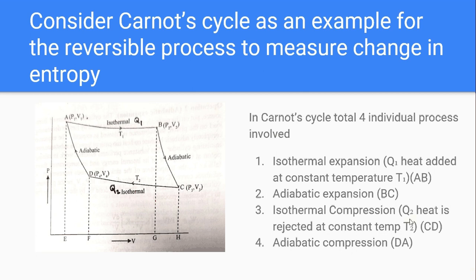The isothermal expansion is an isothermal process in the Carnot cycle. The second process is adiabatic expansion, shown as BC in the figure. Then the third process is isothermal compression. During isothermal compression in the Carnot cycle, we place the working substance cylinder on the sink.